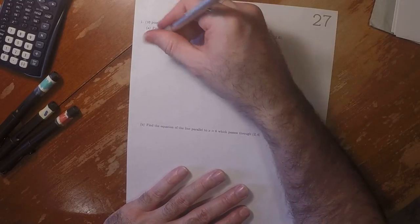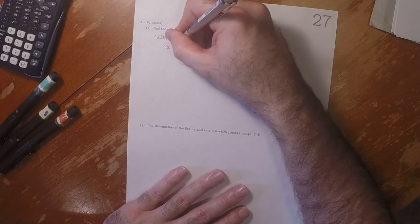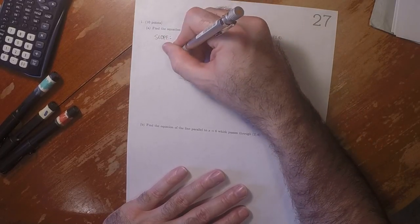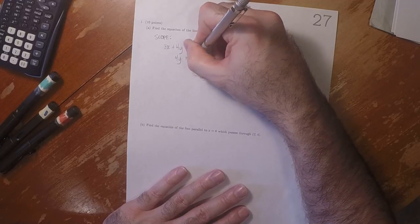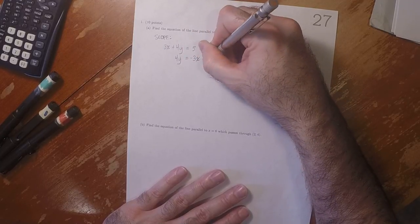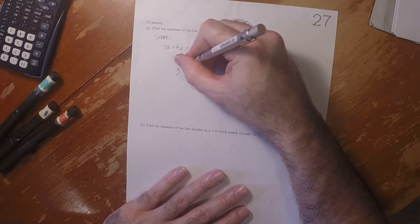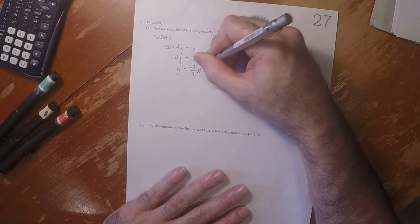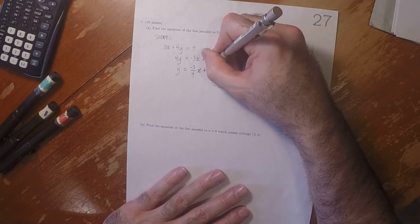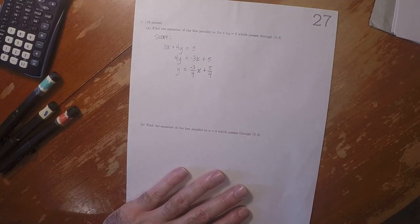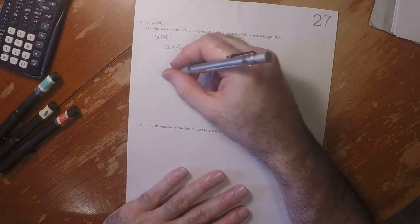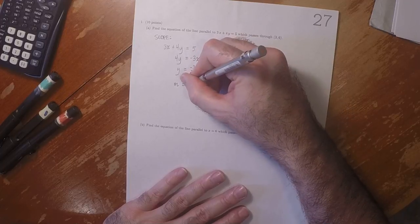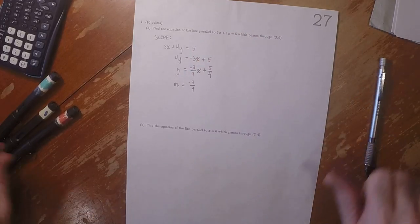So the slope of the line we were given, we start with 3x plus 4y equal 5. So 4y equals negative 3x plus 5. So y is negative 3 fourths x plus 5 over 4. This tells us that the slope is negative 3 fourths, that value.